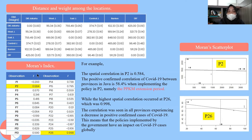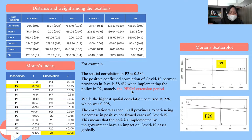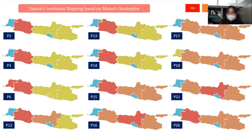After obtaining Moran's Index, the next step is to create the Moran scatter plot. Based on the z-test using the Moran Index test statistic, the scatter plot determines which provinces fall into the HH, LH, LL, or HL quadrant categories. An example is shown for the second partition and the 26th partition. The quadrant results from the scatter plot are then mapped onto a map of Java's provinces to visualize the spatial influence of government policies on positive confirmed COVID-19 cases.